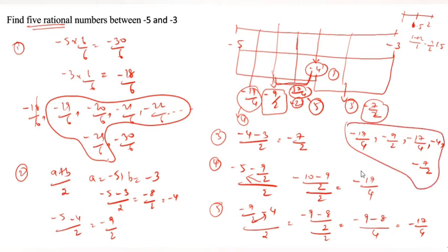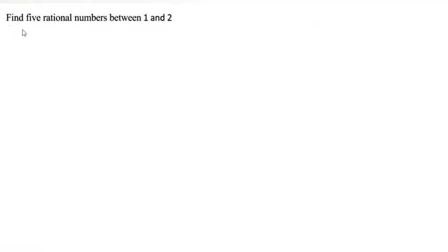If you need 6 rational numbers, you can take minus 7 by 2 and minus 3, calculate in between — that gives a sixth rational number.